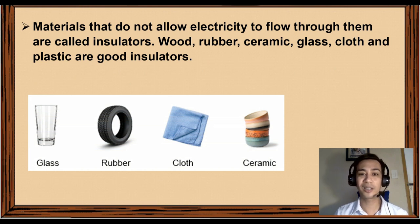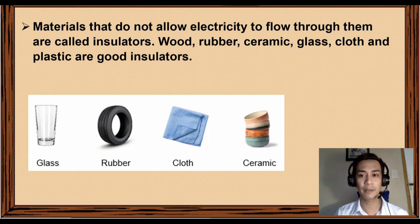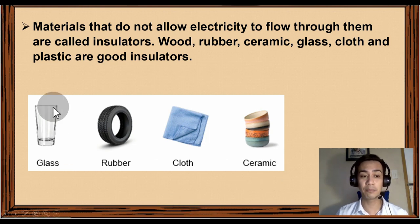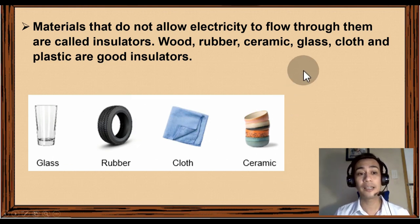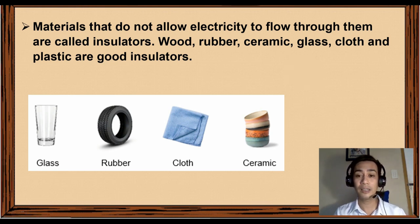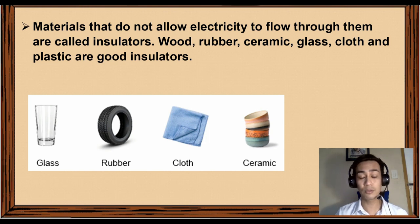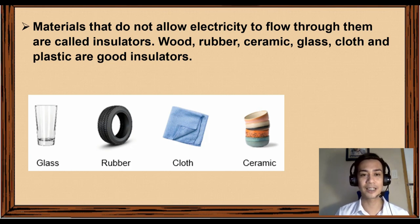Materials that do not allow electricity to flow through them are called insulators. Wood, rubber, ceramic, glass, cloth, and plastic are good insulators. They do not allow electricity or heat to pass through them — they are poor conductors of heat and electricity.